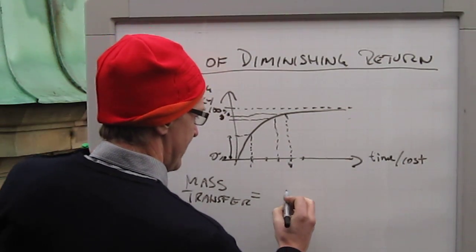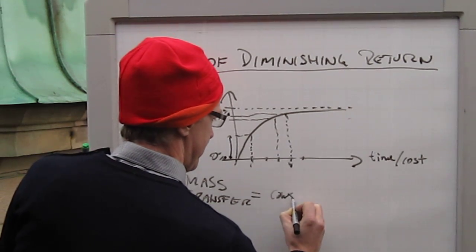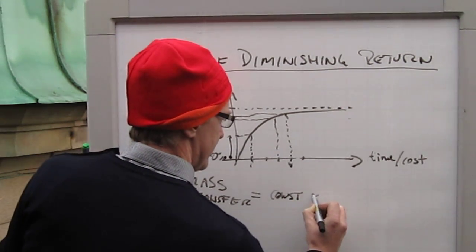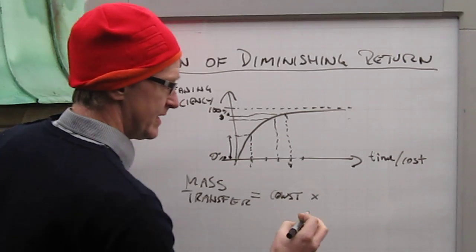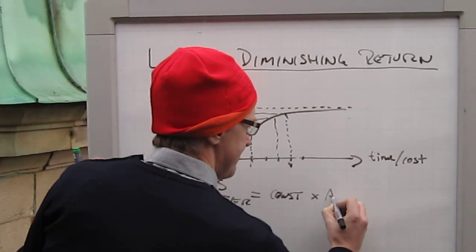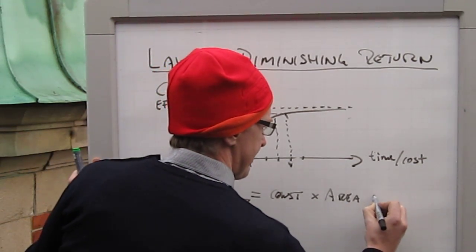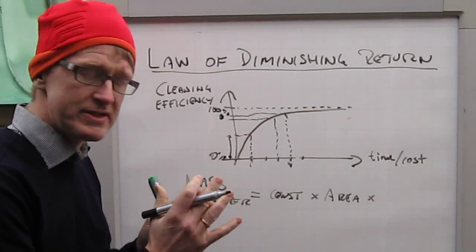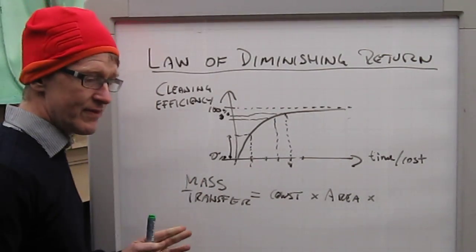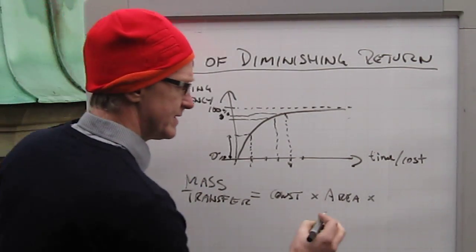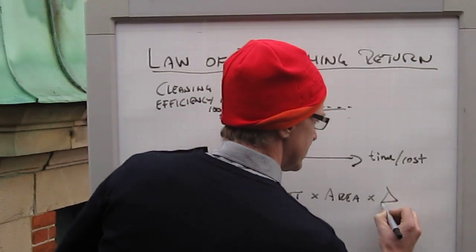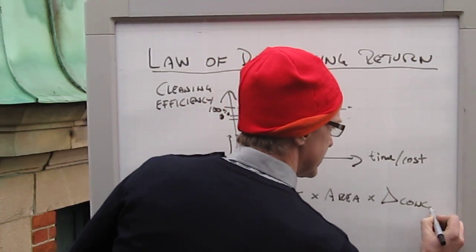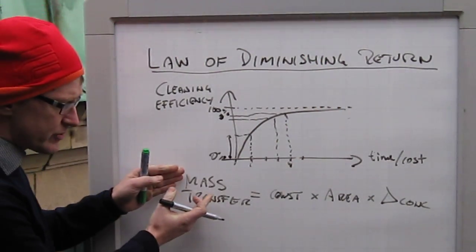So we have a constant times, in this case, area, which is the area of the interface, and then also the driving force, which in this case is a difference in concentration. So it's a delta concentration. It's a mass transfer thing. The driving force is a difference in concentration.